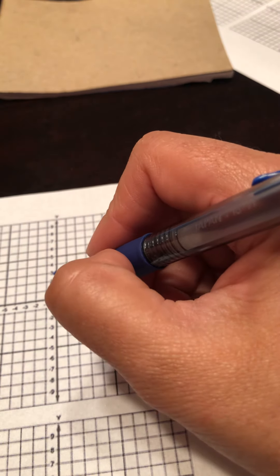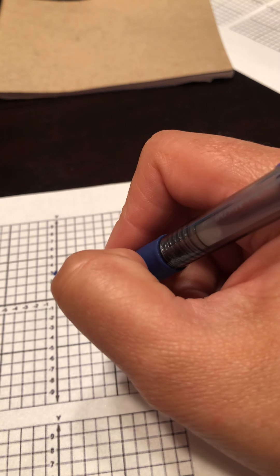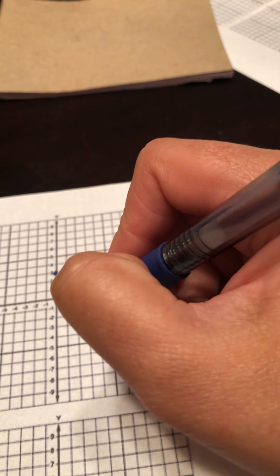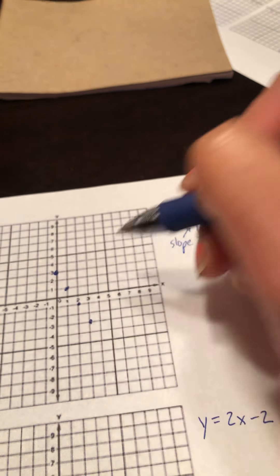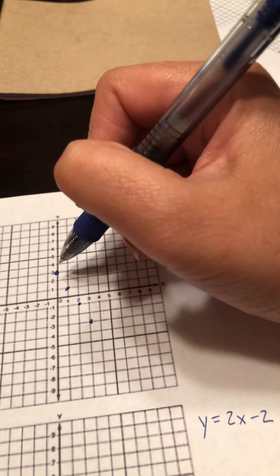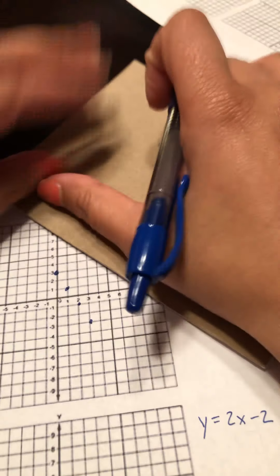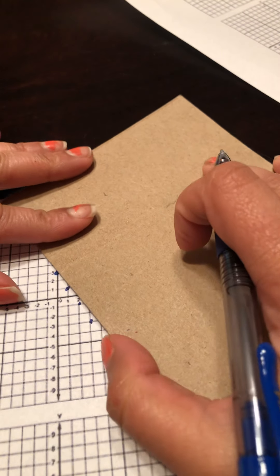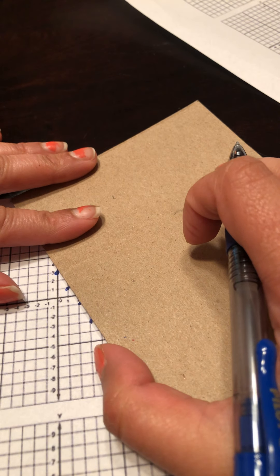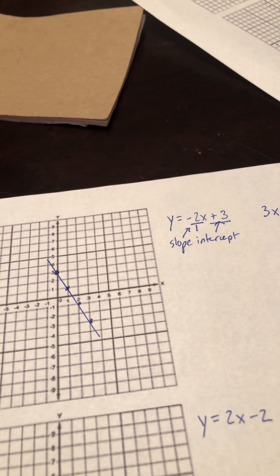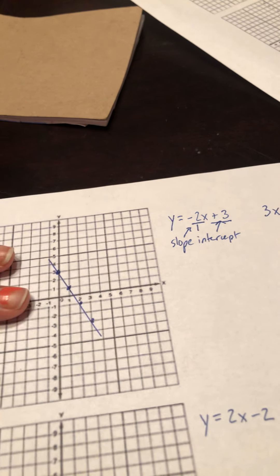I'm going to go down two over one, down two over one, down two over one, and use a straight edge to draw the line. If you're using Alex, it'll give you a little line editor so you can draw a line as well.